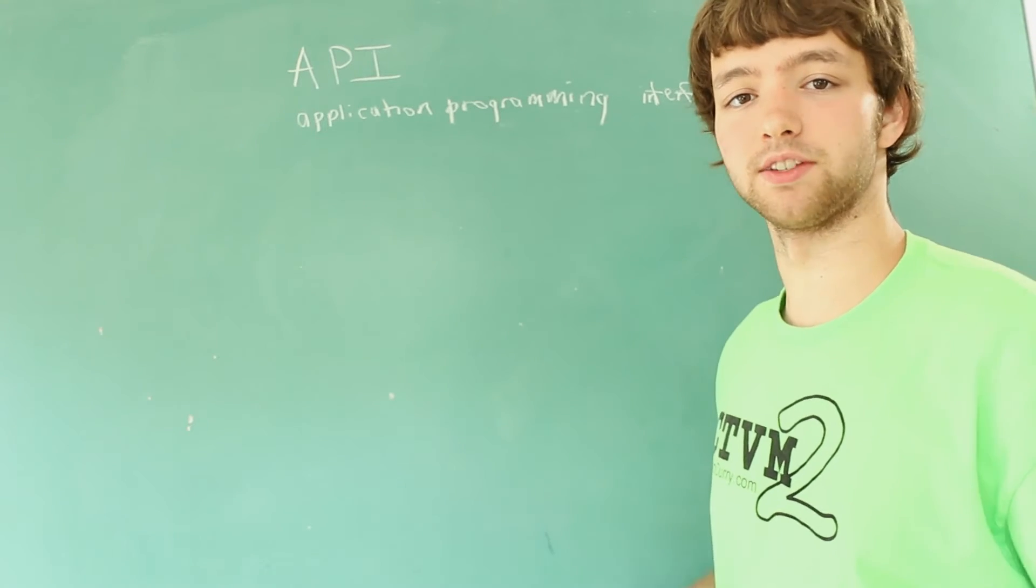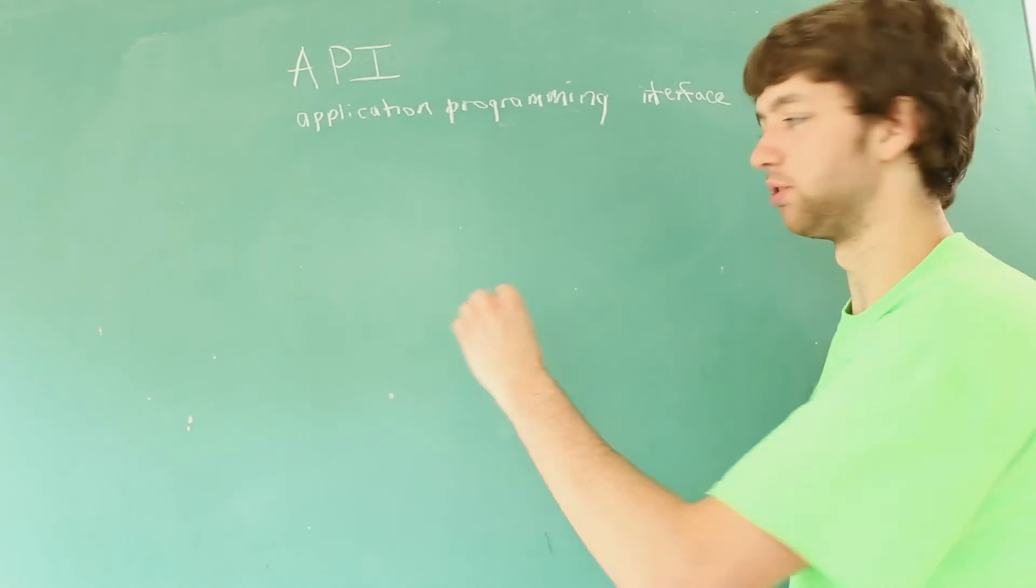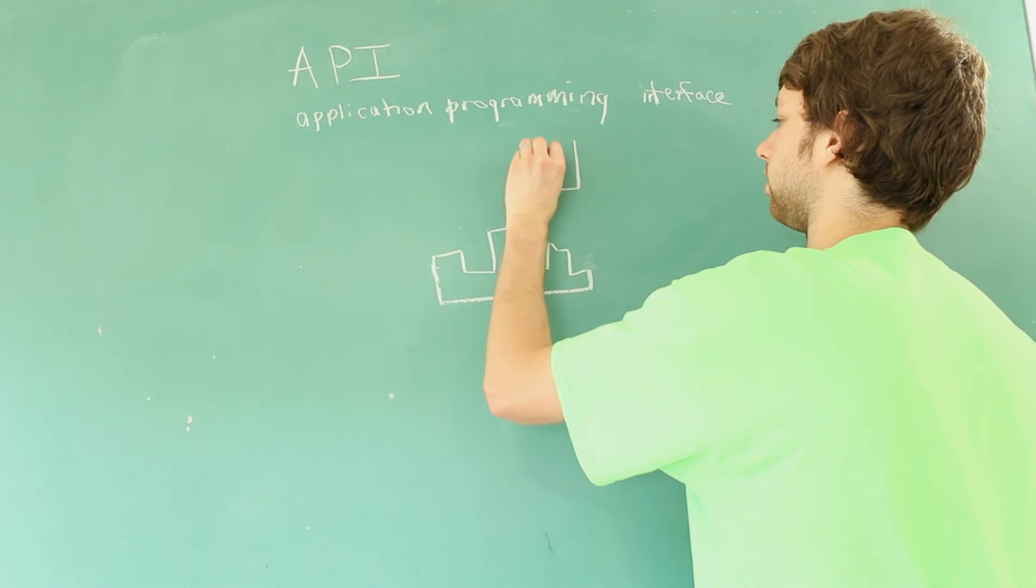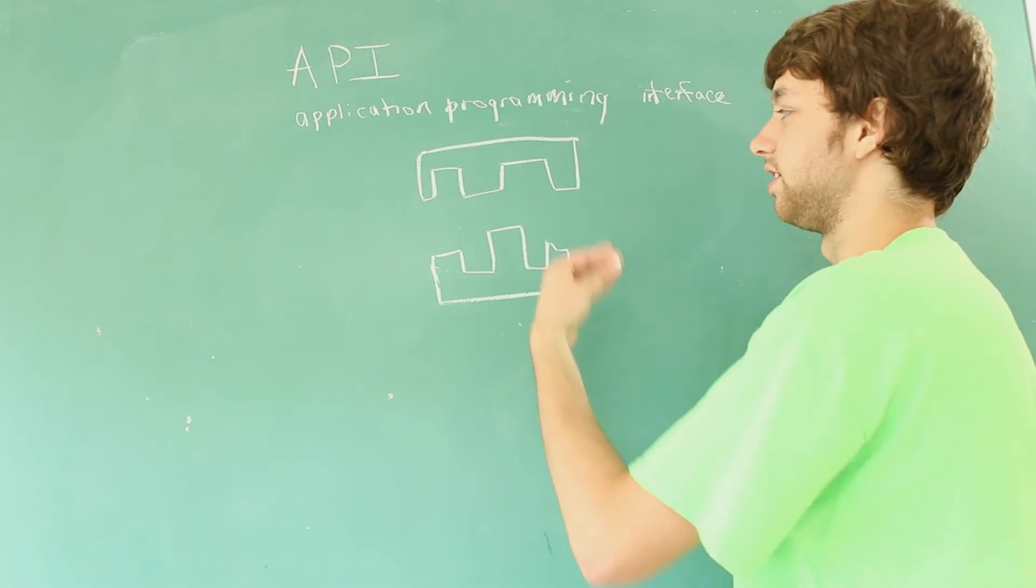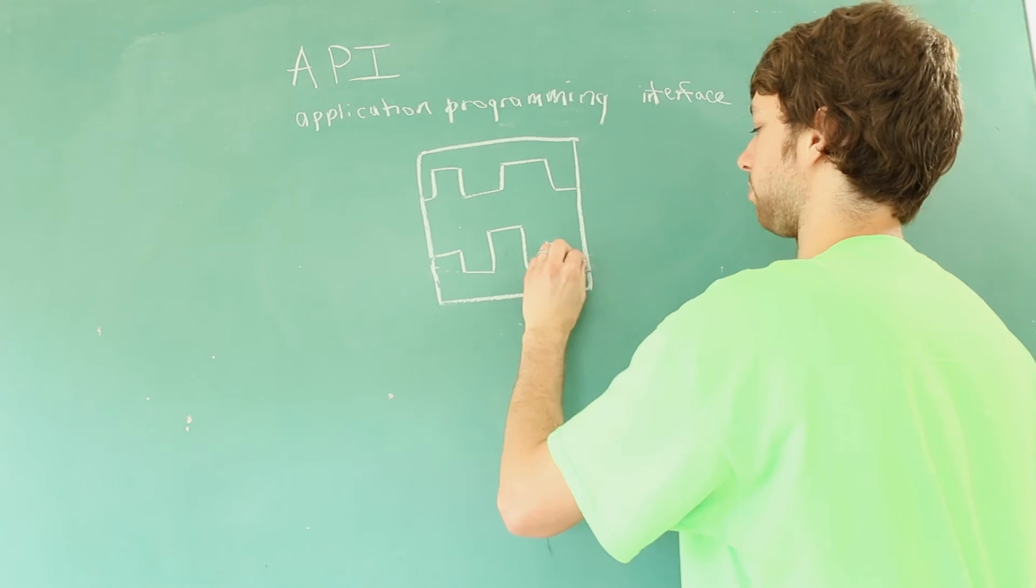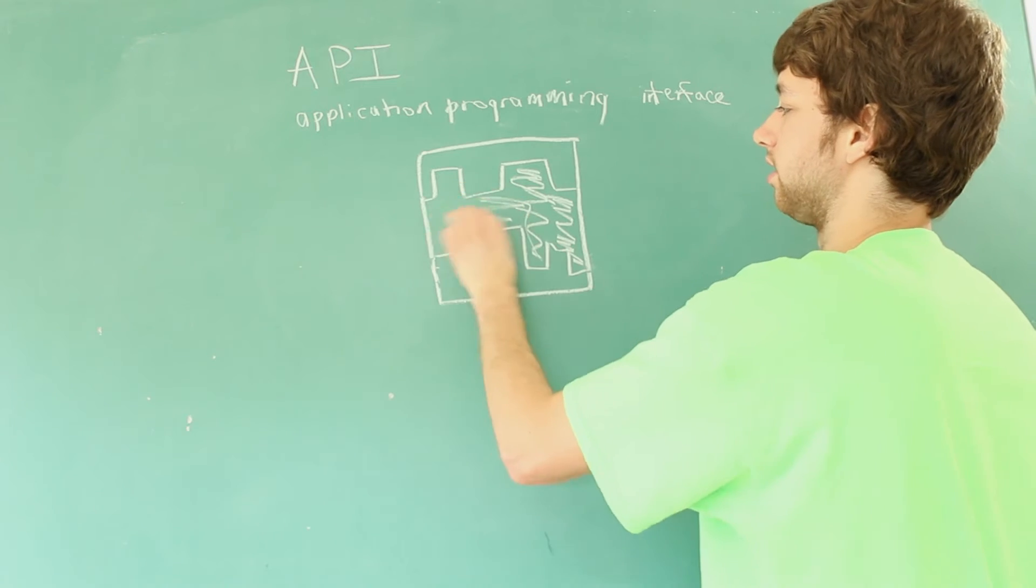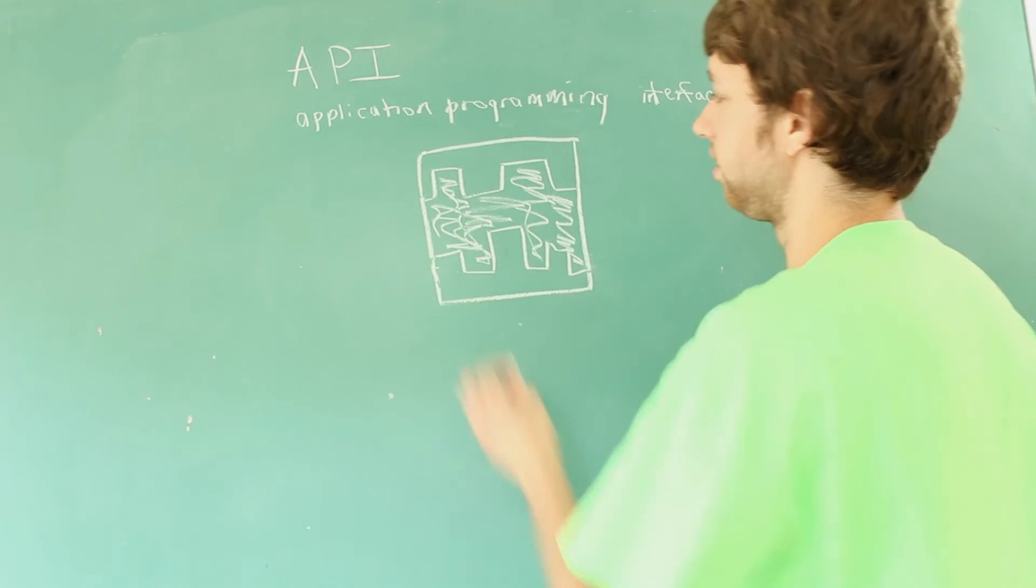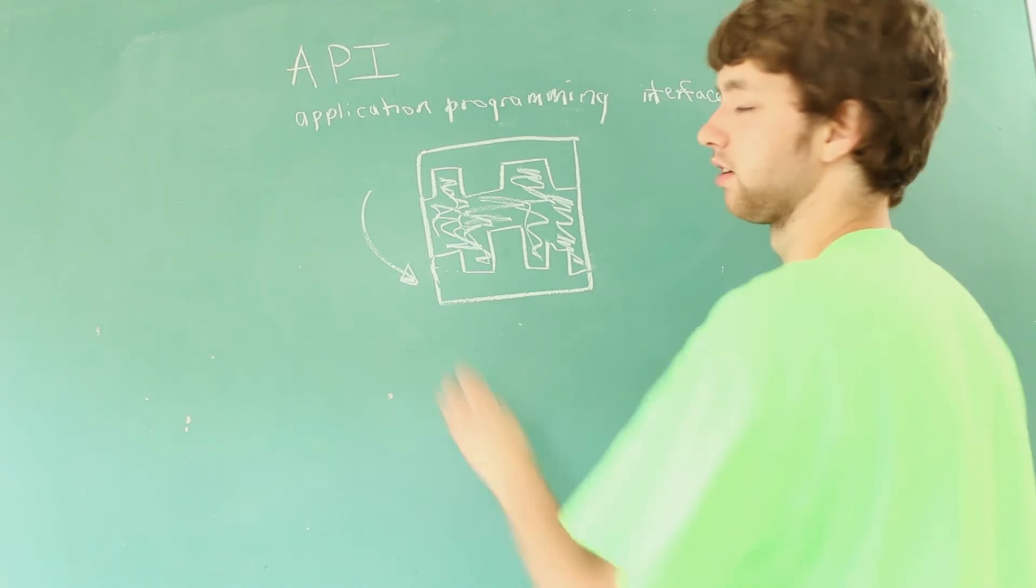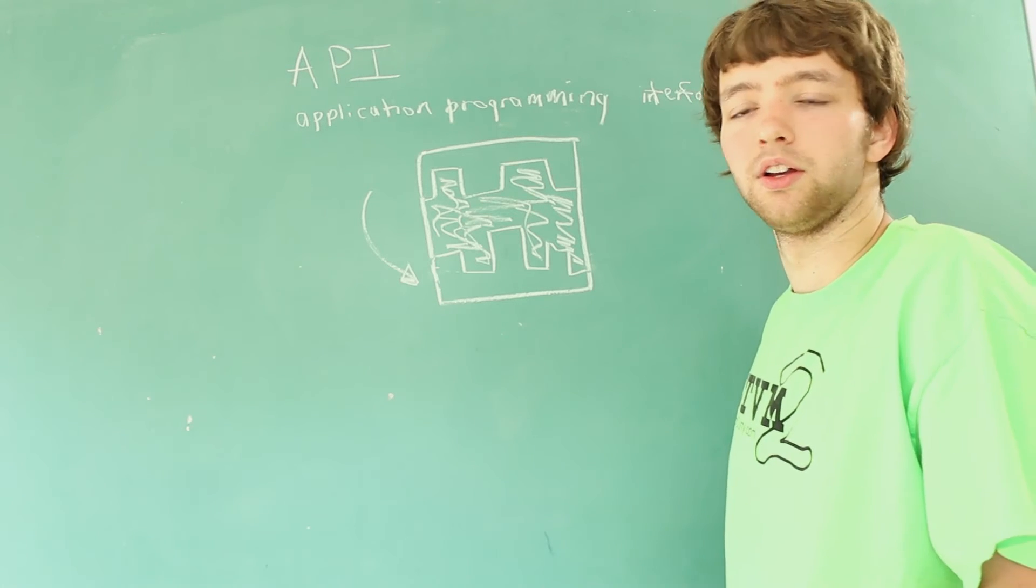A couple examples of interfaces in programming are operating systems. Operating systems are a layer between your hardware and your software. The job of the operating system is to act as an interface between these two, filling the gaps so the operating system can meet the needs of both the hardware and the software. Without the operating system you would have to program directly onto the computer hardware.